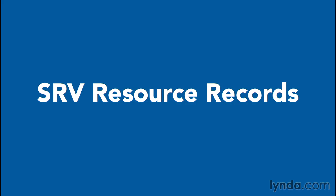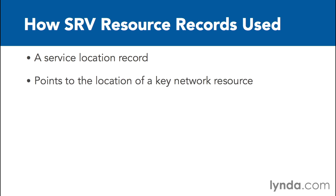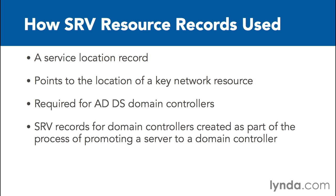The next resource record type is the SRV resource record type, which is basically a service location record. It points to the location of a key network resource on the network. To have an SRV record, it needs to be part of the Active Directory Domain Services Domain Controller. The SRV records for a domain controller are created as part of the process of promoting a regular server up to a domain controller.